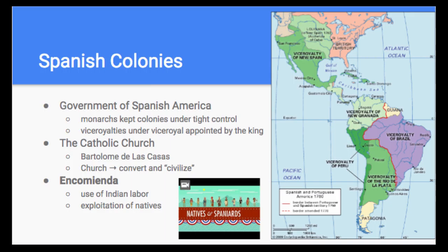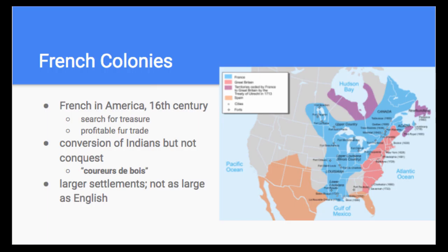The other European nation that founded colonies was the French. The French moved gradually into North America in the 16th century. Like the Spanish, they initially came looking for treasure, but found none in what is today Quebec. They stayed, however, because they found it profitable to trade European goods with the Indians for animal furs. Whereas the Spanish found gold and silver, the French focused on the fur trade, something that was actually on the rise in Europe at this time.